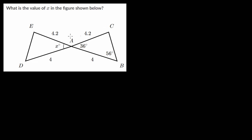In this video, I'd like to continue talking about finding angles in congruent triangles. With this example problem, we have two different triangles and we need to determine a way to prove that these two triangles are congruent and also figure out what the missing angle is.